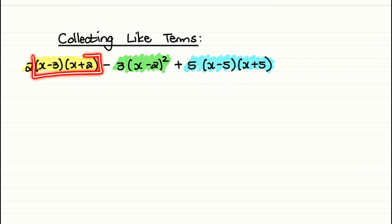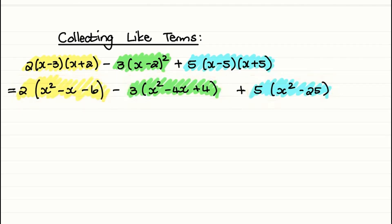First, let us remove or multiply out each of the sets of brackets individually. So in the yellow part, we are left with 2 times (x² - x - 6).